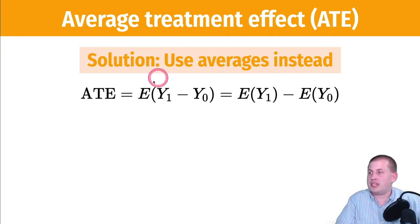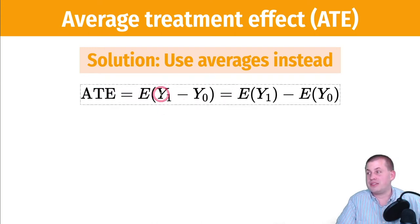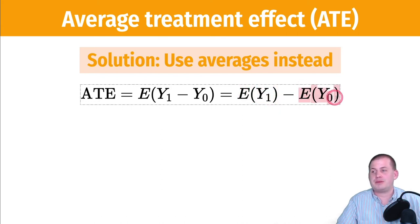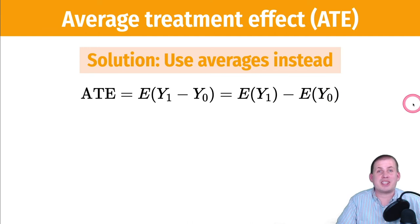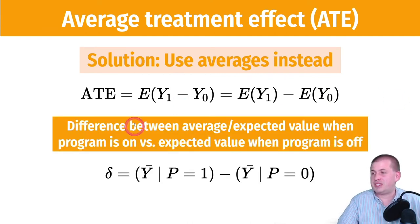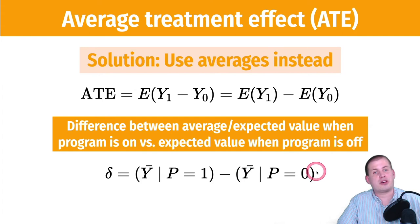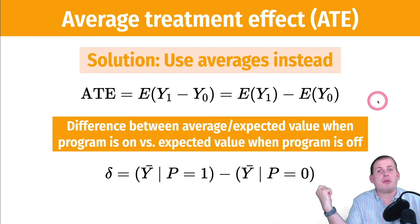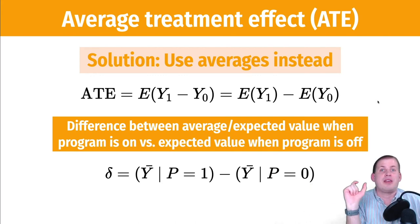You can write the ATE in different ways. The average treatment effect is the expected value of the outcome if you do the program minus the outcome if you don't. Through the distributive property, this is just the expected value for people who do the program minus the expected value for people who don't. In do operator language, it's the average outcome when the program is on minus the average outcome when the program is off.